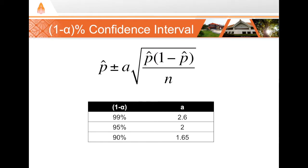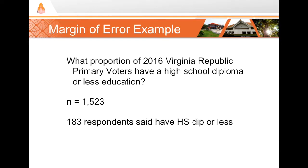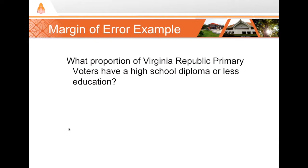Let's look at an example: the 95% confidence interval from the Virginia Republican primary. The question is: what proportion of 2016 Virginia Republican primary voters had a high school diploma or less? In our cross-sectional sample of 1,523 people, 183 responded that they have a high school education or less. First we compute p-hat: 183 divided by 1,523 gives us a p-hat of 12%.